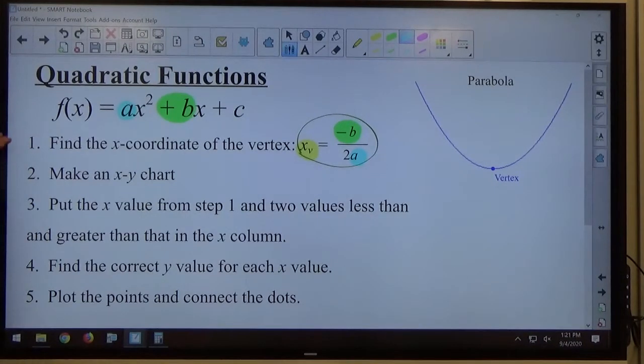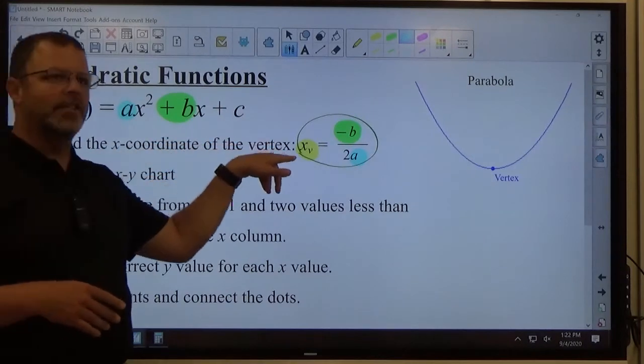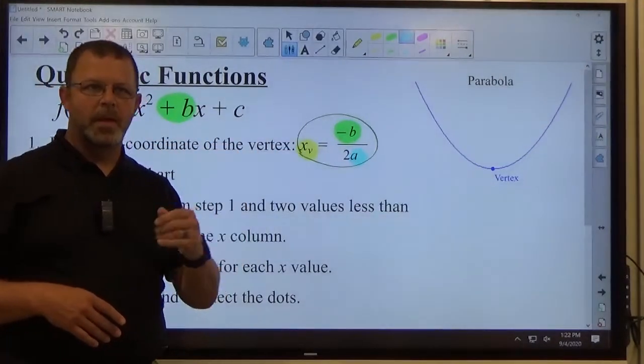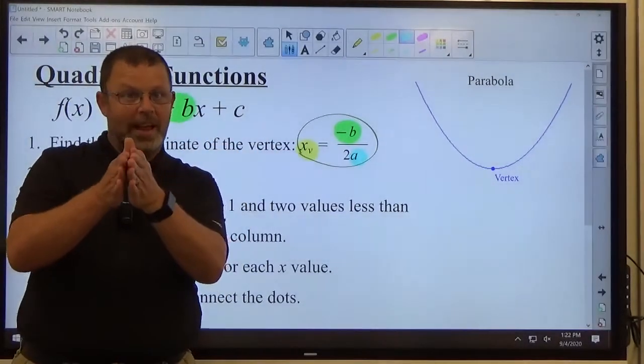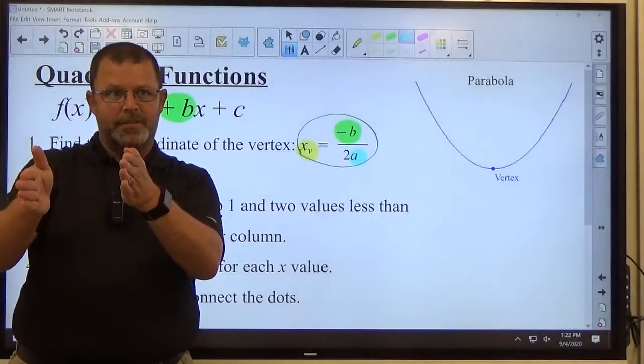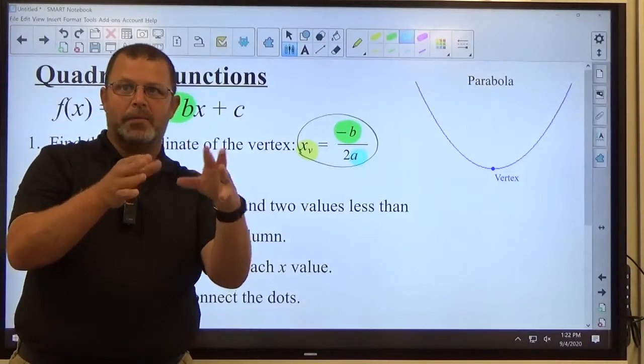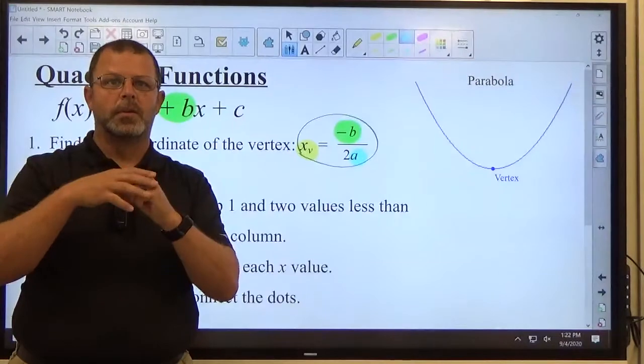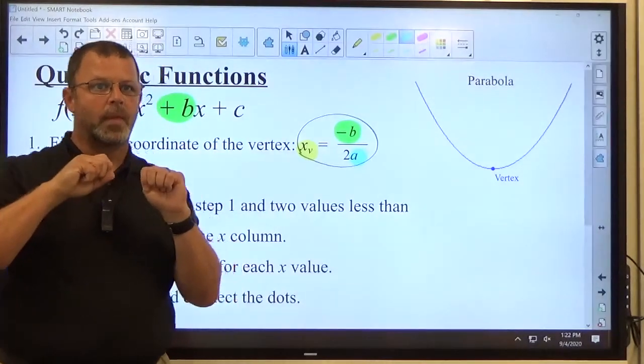After you get that value, you make an xy chart. And I'm going to do an extended xy chart. You'll see what I mean when we get there. We're going to put the x value from step one and two values less and greater than that in the x column. So, for example, let's say we get this here that says x equals 7. If x equals 7, less than 7 would be 6 and 5. Bigger than 7 would be 8 and 9. We want to pick numbers near that number, less than and bigger than that.